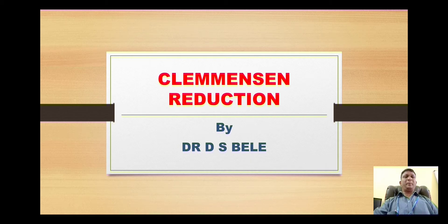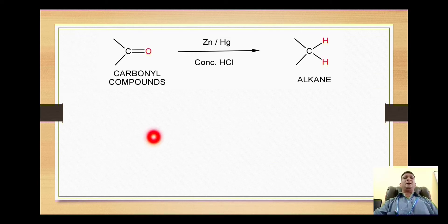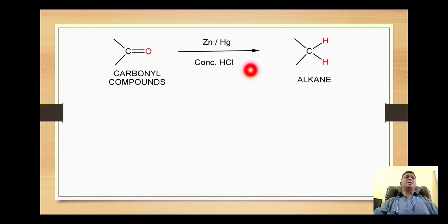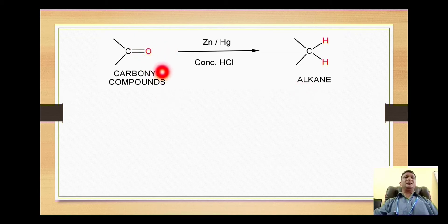Hello dear students. Today's topic is a very important and very simple reduction reaction which is called Clemmensen reduction. In this reaction, a carbonyl compound, mainly a ketone, on reaction with zinc amalgam and concentrated hydrochloric acid will give formation of a corresponding alkane. The double-bonded oxygen is replaced with two single-bonded hydrogens and the product obtained is called an alkane.